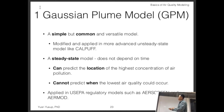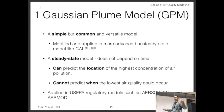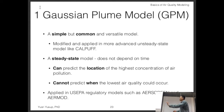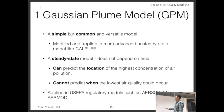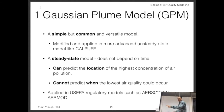Even the advanced model CALPUFF uses this simple Gaussian plume model as its basis. The Gaussian plume model we're using is a steady-state model, meaning it doesn't change with time. It produces a single value — one that does not depend on time. It can predict the location of the highest concentration of air pollution, giving you an idea of where the highest pollutant concentration would be, but it cannot predict when the lowest or highest air quality would occur, because it is time-independent.